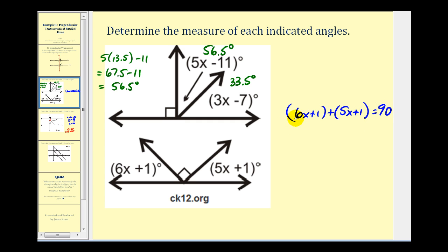So we'll combine our like terms. We have 6x plus 5x, that's 11x, and then 1 plus 1, that'll be plus 2, equals 90. Subtract 2 on both sides. We have 11x equals 88. Dividing both sides by 11, we have x equals 8.